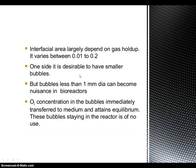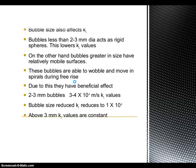Smaller bubbles, less than 1 mm, are ideal for oxygen transfer in a bioreactor. I will show the bubble sizes: using 3 mm, 1 mm, and 2 mm examples. The 3 mm diameter bubble behaves as a rigid sphere. This affects the KL value. The mobile surface and spiral movement during free rise are beneficial effects of smaller bubbles.